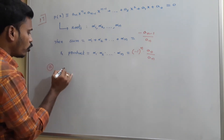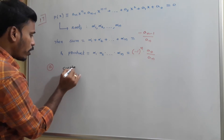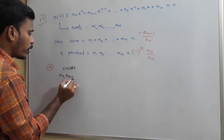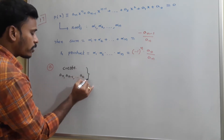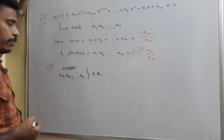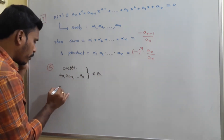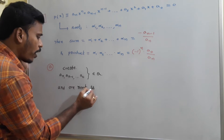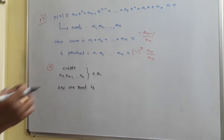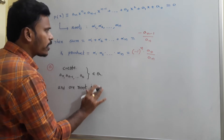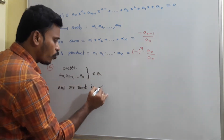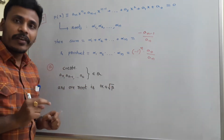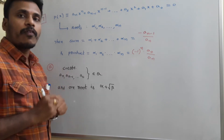First, look at the coefficients — aₙ, aₙ₋₁, and so on down to a₀. First case: if all these coefficients are rational numbers and one root is of the format α+√β, then what do we say about the other roots? The coefficients are all rational numbers and one root is α+√β.